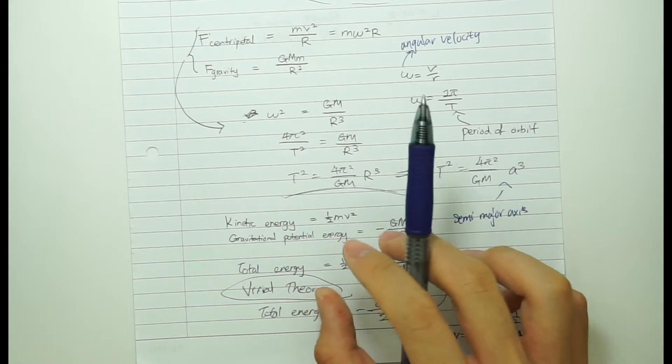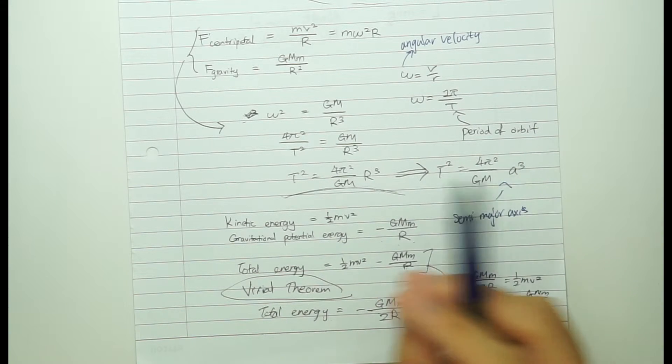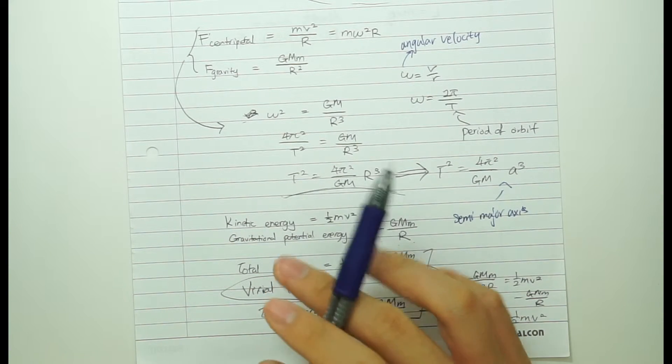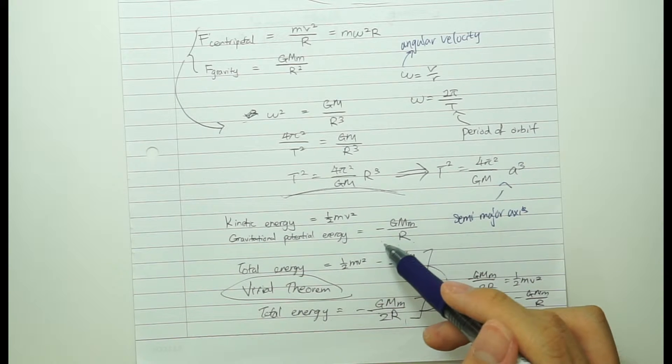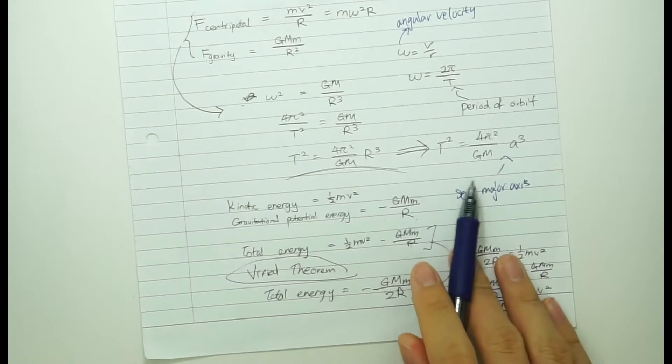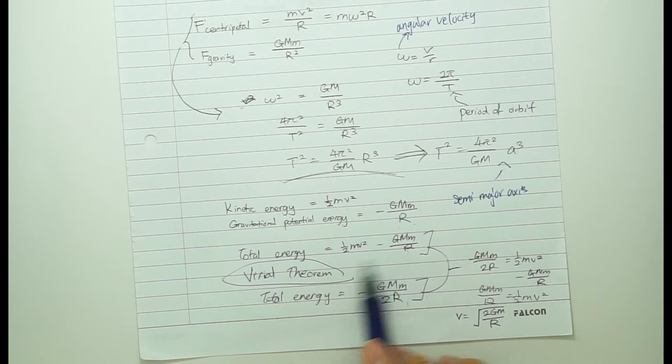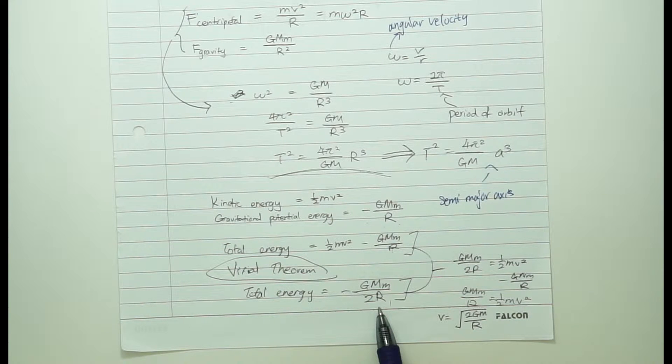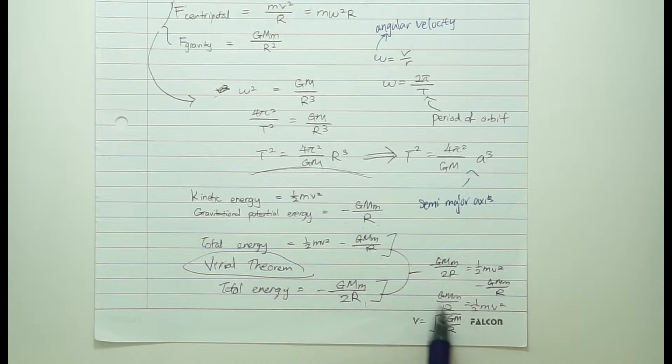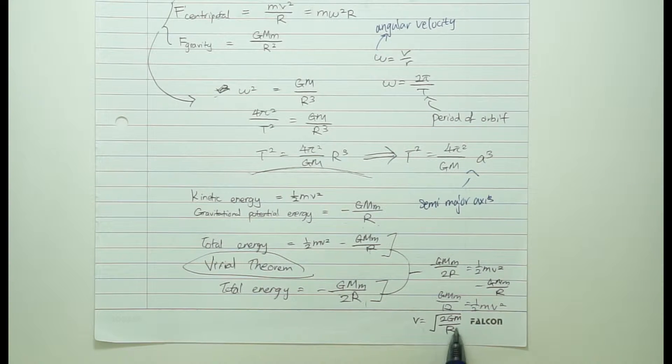Actually, the only reason this is negative is because we're taking the reference point at infinity to be zero. So when an object is infinitely far away, it will have zero potential energy. And when it gets closer, it will get negative because it's attracting. So when it accelerates, it picks up more energy, then it gains more negative potential energy. So total energy will be given by this. So you can use the Virial theorem, which basically states that total energy will also equal to minus GMm over 2r.